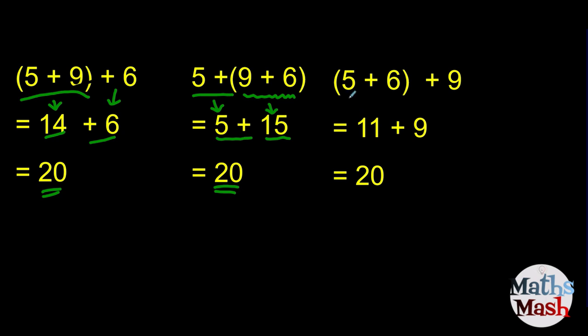And our third example. 5 plus 6 in the brackets. That'll give us 11. And then we copy down the plus 9. So, it's 11 plus 9 gives us 20.